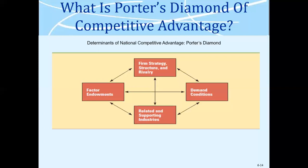For example, look at beverages — Coca-Cola and Pepsi. They might be the top two beverage companies, but there are two of them, not just one. You will always have some competition. How are you going to beat your competition? What strategy will you have? What differentiation needs to be in place? And finally, what are the supporting industries?